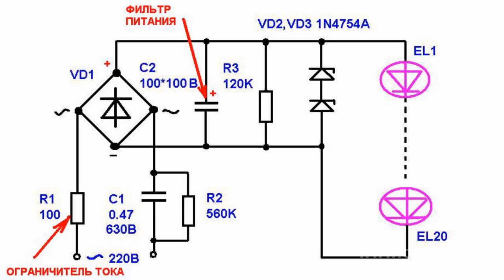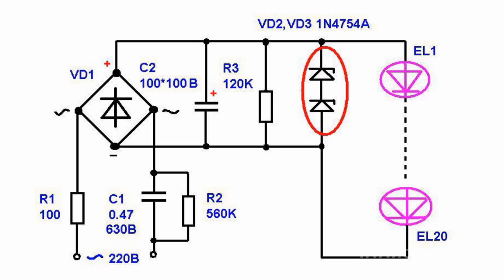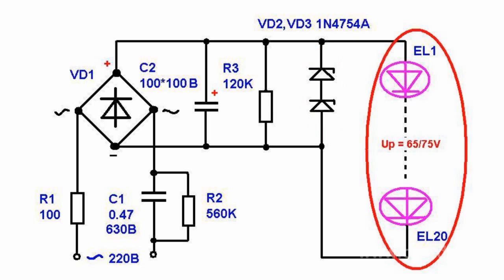C2 capacitor is shunted with zener diodes BD2 and BD3 to ensure short circuit protection. The zener diodes are selected in such a way that the total stabilized voltage is a bit higher than the voltage drop across the LEDs.